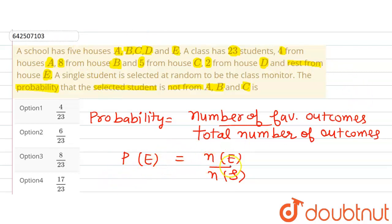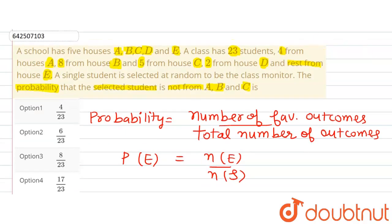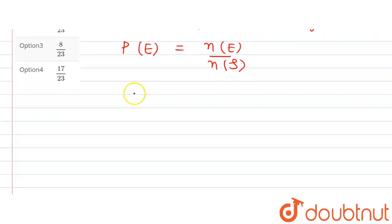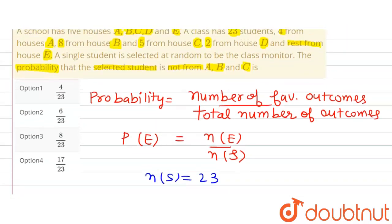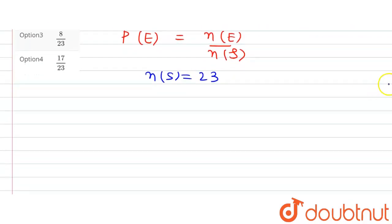Now, the total number of outcomes: since there are 23 students, N(S) equals 23. The event in this case is that the student selected is not from houses A, B, and C. So let us first find out the total number of students from houses A, B, and C.